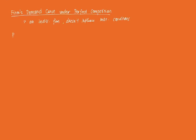So say we have P on one axis and Q on the other. The demand curve for that individual firm is a horizontal line equal to the price of the market. It's a horizontal line wherein P is constant, which is the market price — equal to that prevailing market price.